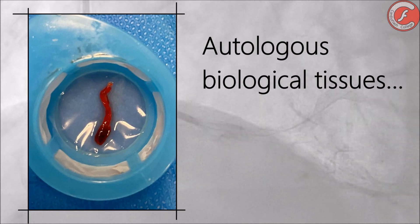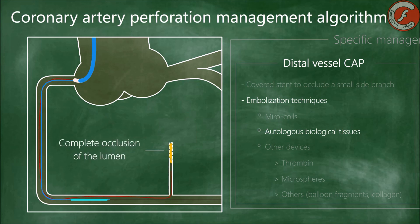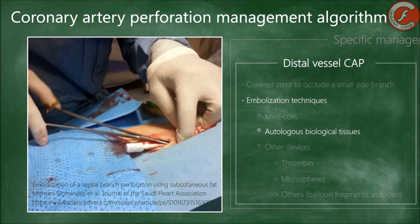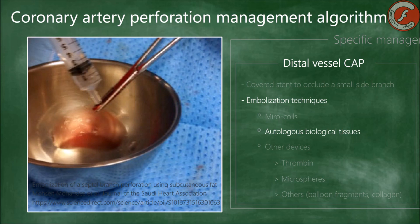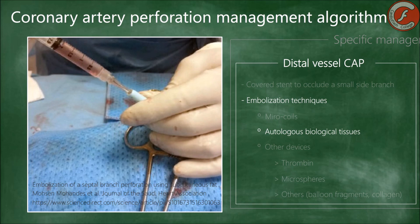Distal coronary embolization of blood clots or the patient's own fatty tissue has been carried out for many years, as these tissues are biocompatible and available in any case, making them a useful alternative when coils or other sealing materials are not available. When using blood, it is recommended to place it in a sterile container and wait for it to clot. When using fat, it should be chopped into very small pieces with a scalpel. After preparation, samples should be soaked with contrast medium so the operator can visualize the tissues during release, then embolized through a microcatheter by pushing with a wire or injecting contrast with a syringe.